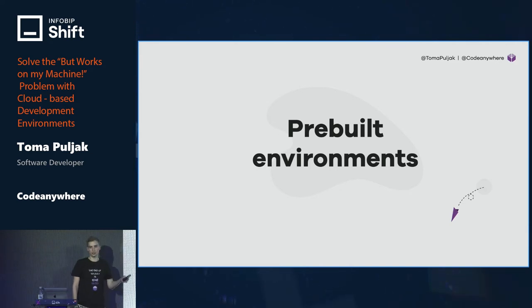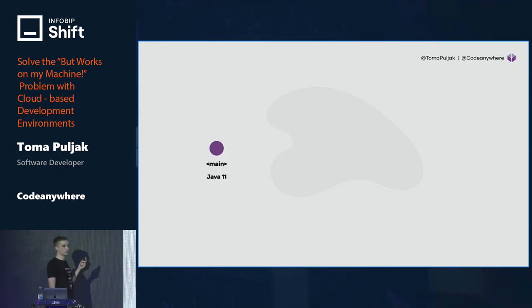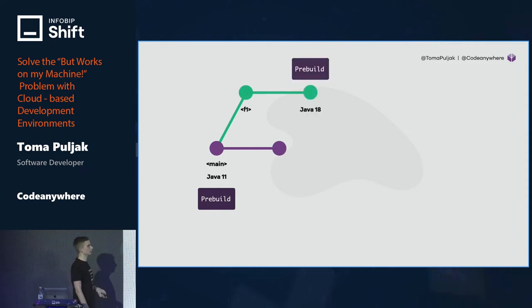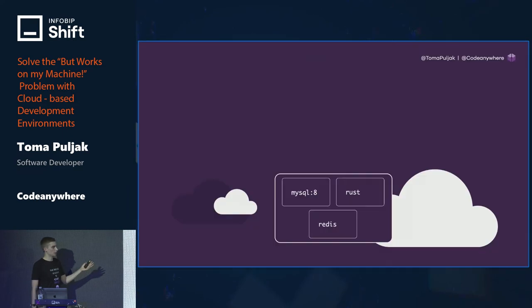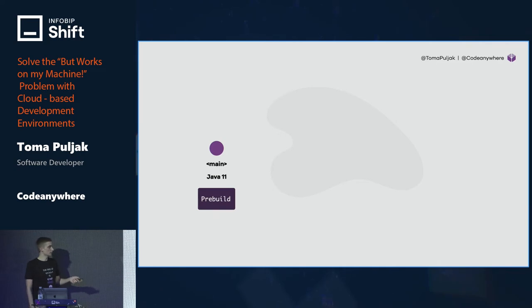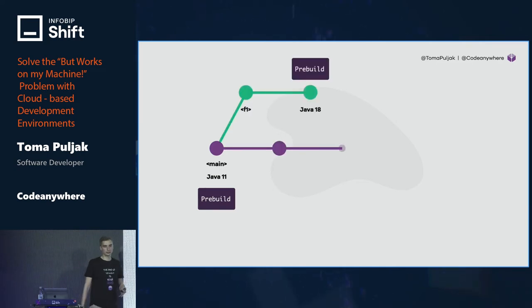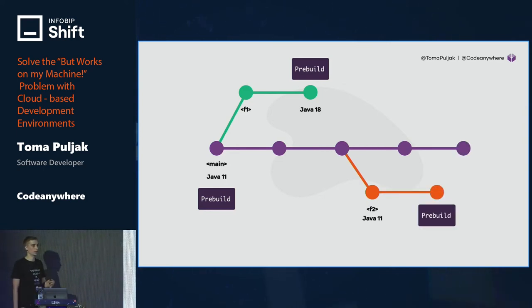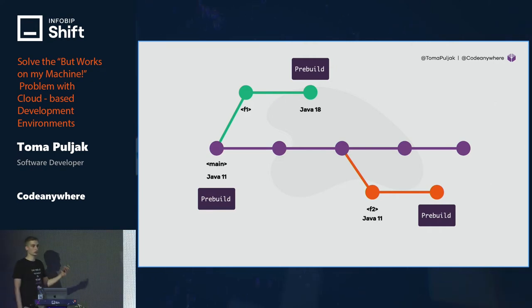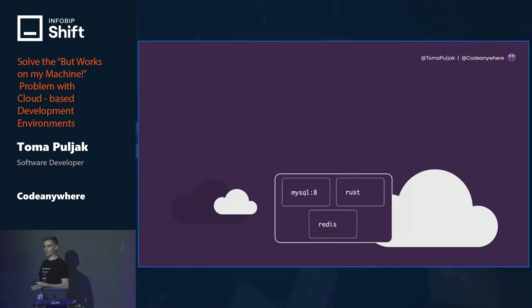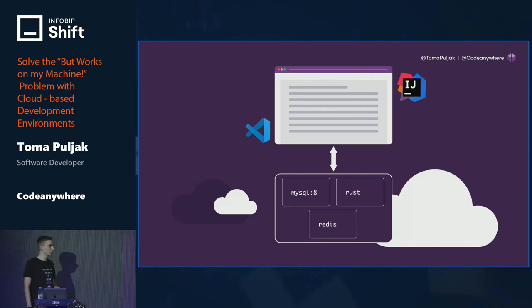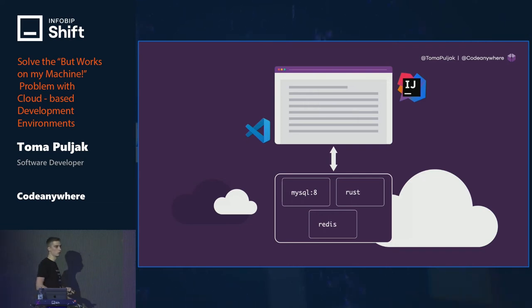Pre-built environments are environments that are pre-built every time your configuration changes in that repository. So if we have a pre-built environment on the main branch, switch to Java 18 and pre-build an environment, then switch to feature branch 2 and rebuild. This is important because it allows all contributors to the project to instantly spin up an environment in literally seconds — because the environment is pre-built, all databases are seeded, all dependencies are already pulled, and you can actually start coding in seconds.